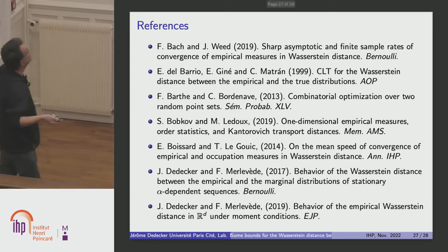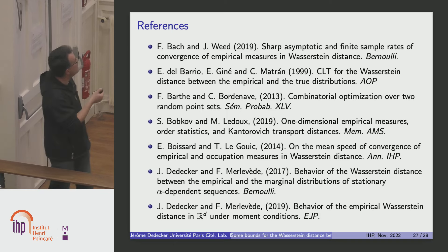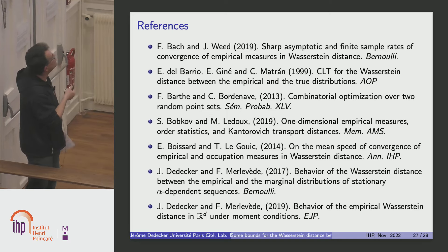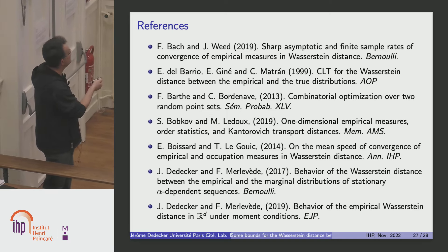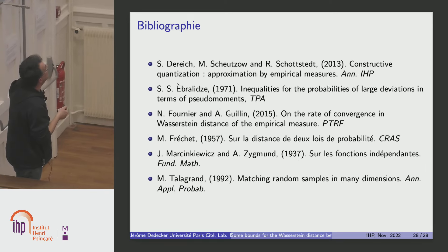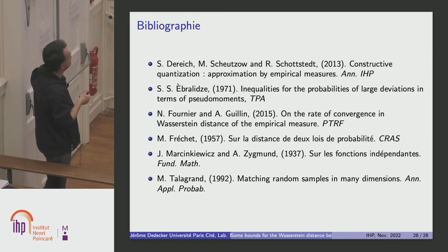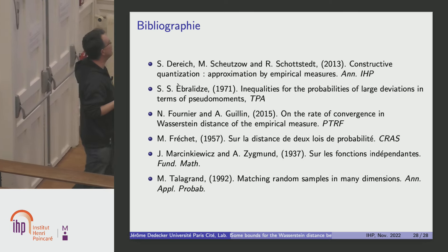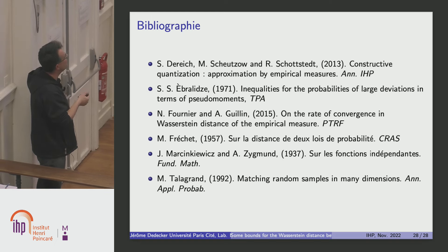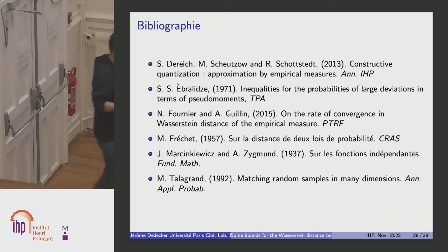I just want to put the main references. The article by Bach and Weed; the article by Del Barrio, Giné, Matrán; the paper by Bardet-Bordenave; the monograph by Bobkov and Ledoux; the paper by Boissard and Le Gouic; the two papers by myself and Florence; the article by Dereich, Scheutzow and Schottstedt; the inequality by Brenier; the paper by Fournier and Guillain; the historical paper by Fréchet; the historical paper by Marcinkiewicz and Zygmund; and the paper by Talagrand on the matching problem in many dimensions. Thank you for your attention.